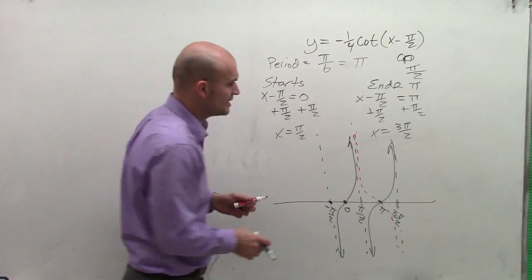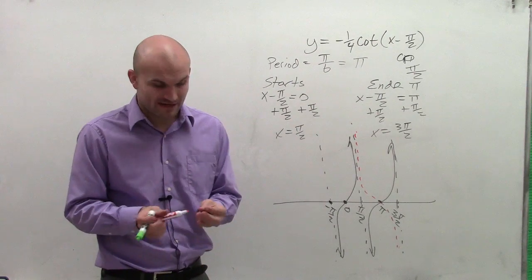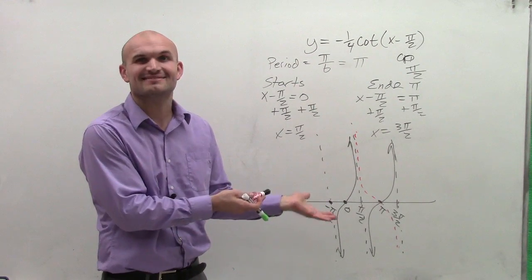And then here's two periods of your cotangent graph with the reflection and phase shift. There you go, ladies and gentlemen, there's graphing cotangent. Thanks.